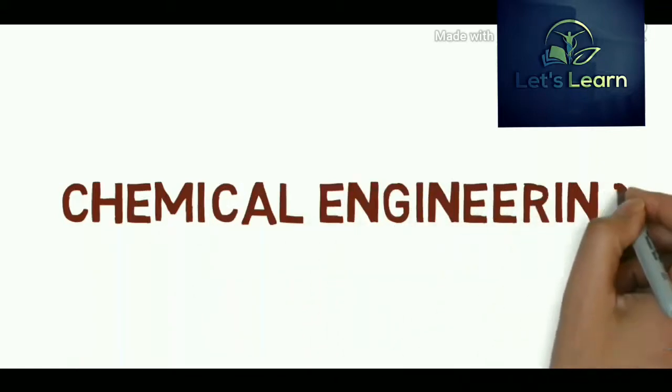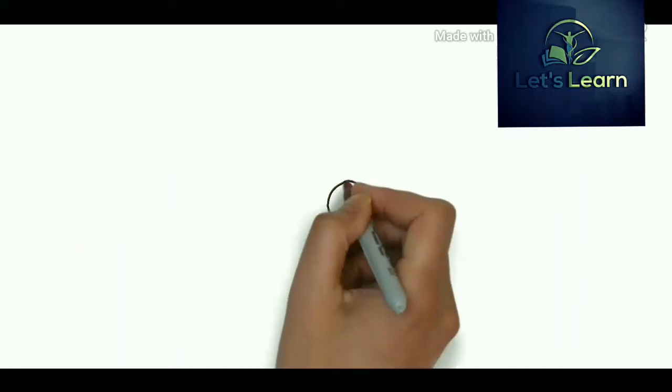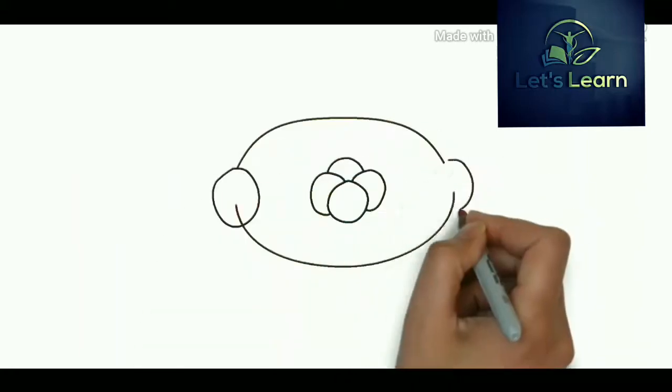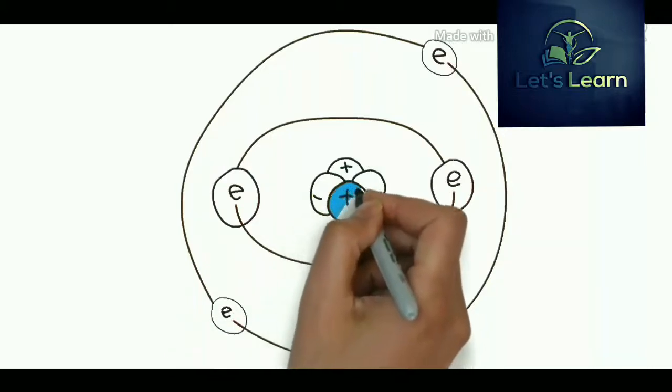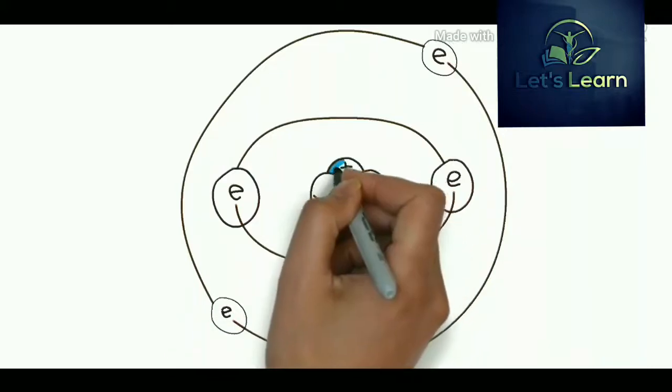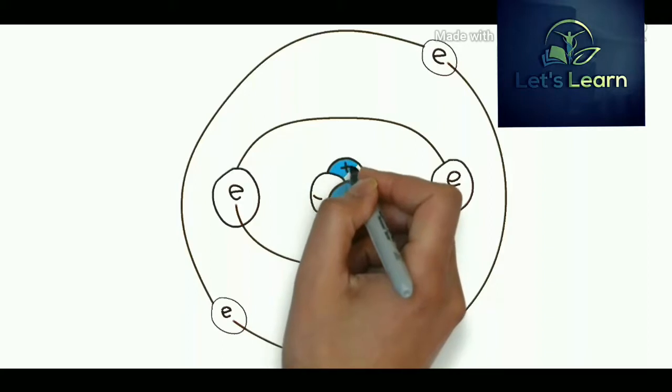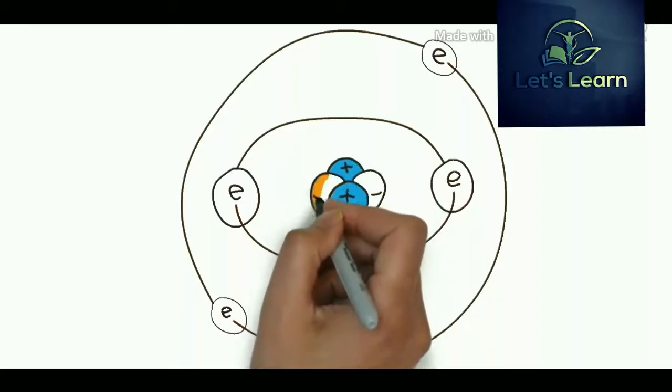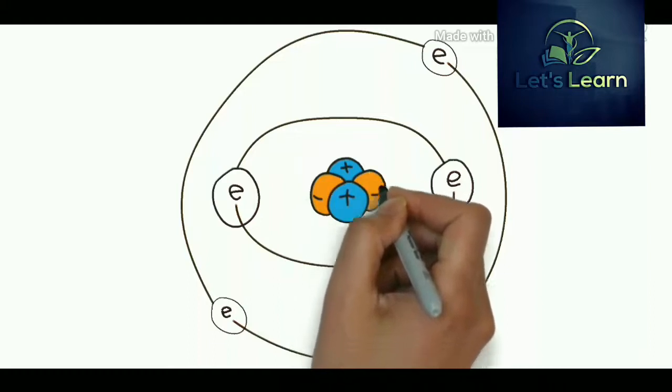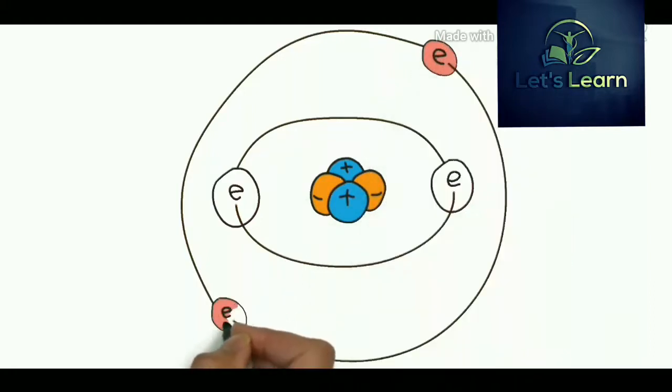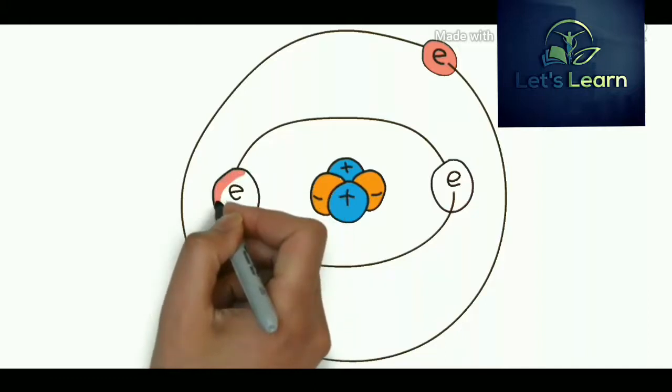Let's discuss them one by one. The first one is chemical engineering. Chemical engineering is the application of physics, chemistry, biology, and engineering principles in order to carry out chemical processes on a commercial scale, such as petroleum refining, microfabrication, fermentation, and biomolecule production.